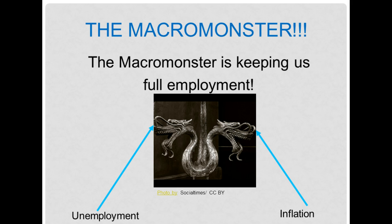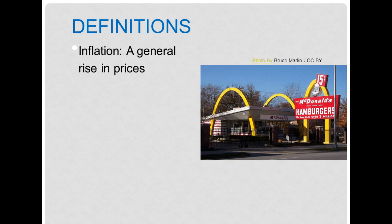To do that, we need some basic information, including a definition. The definition is very simple: inflation is a general rise in prices. McDonald's is a good example. This is a picture taken from back in the 1950s or 1960s when hamburgers were $0.15. It would be very hard to find a hamburger today for $0.15. The reason hamburgers today are no longer $0.15 — they're quite a bit more — is because of inflation.